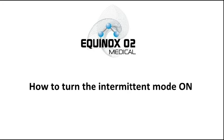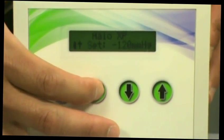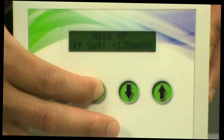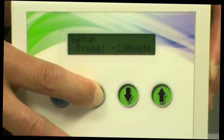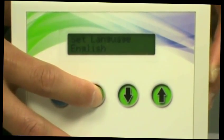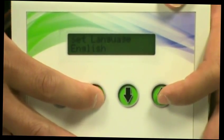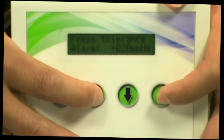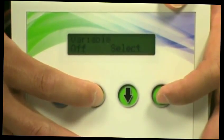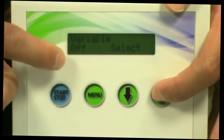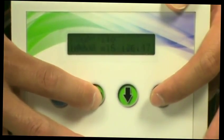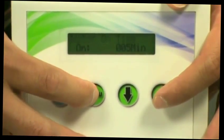How to turn the intermittent mode on. Press the menu button for ten seconds or until you reach the second menu option. Once you've reached the second menu option, continue to press menu until you've reached the variable option. Turn variable on and exit out of the second menu option.